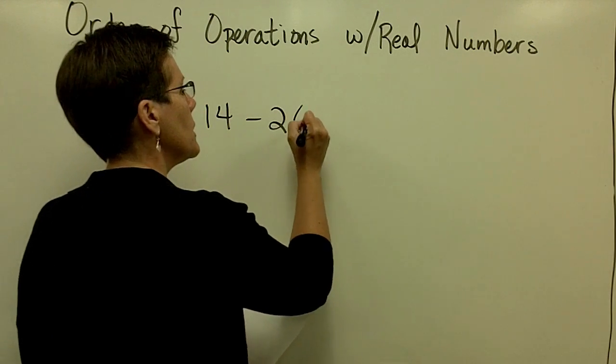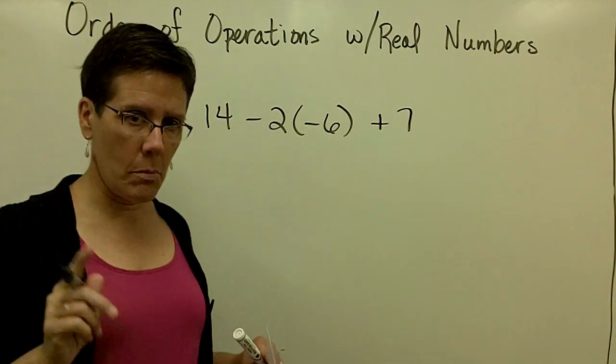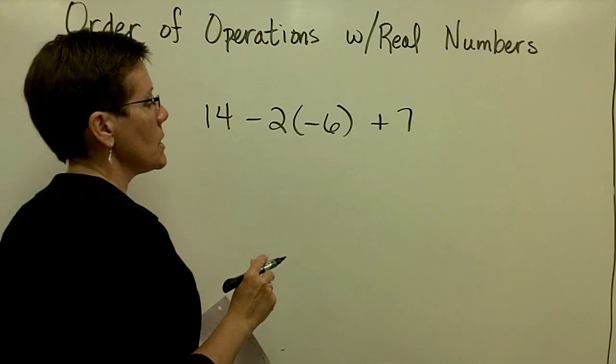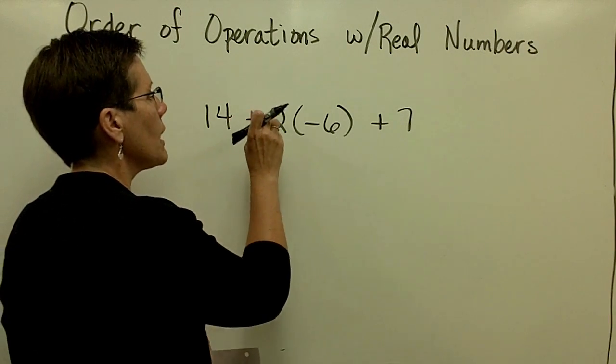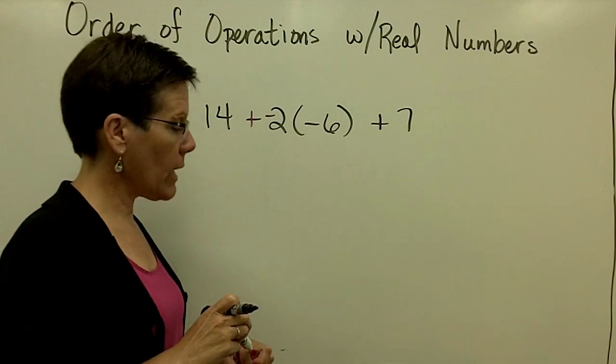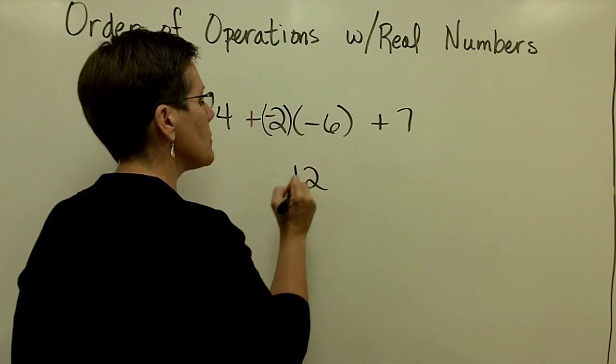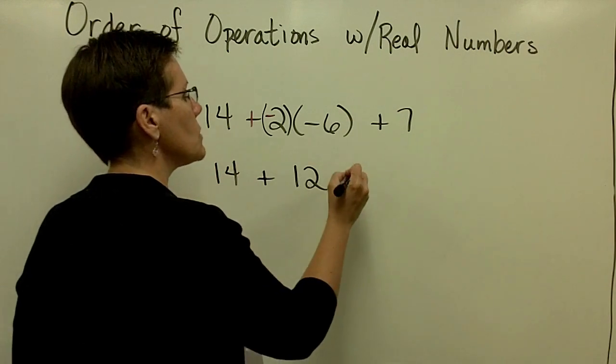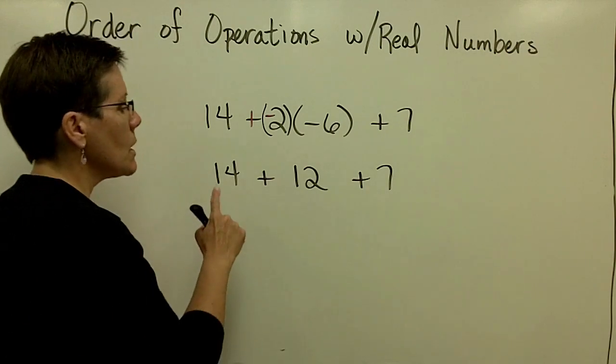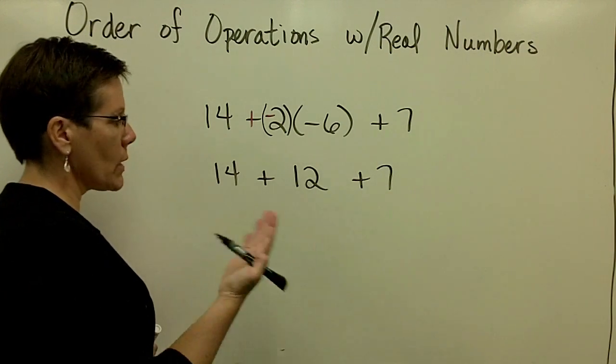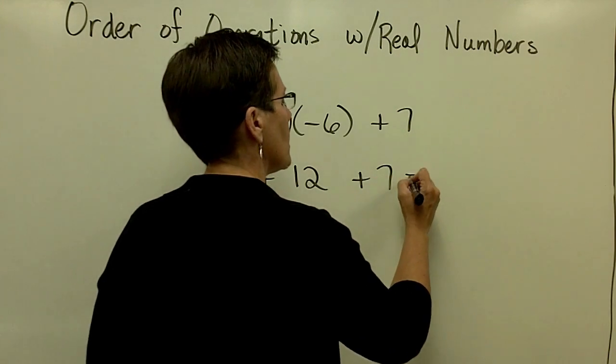14 minus 2 times negative 6 plus 7. Multiplication comes before addition and subtraction. If you have any interest in making this minus 2 a negative 2, add the opposite, so that you can take a negative 2 times a negative 6 and get a positive 12 there. So you'll have 14 plus 12 plus 7. That's one approach to this problem. Then I would just work from left to right. They all happen to be positive numbers, so I can add them all at once. 14 and 12 is 26 plus 7 is 33.